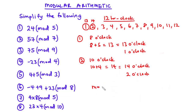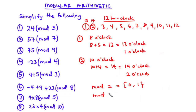Before solving questions, consider this important point: for a particular modulo — say modulo 2 — the 2 means we have only two numbers: 0 and 1 (one less than 2). In modulo 5 we have five numbers starting from 0 and ending at 4 (one less than 5): 0, 1, 2, 3, 4.